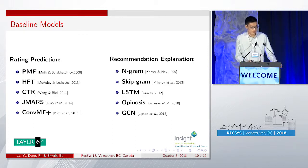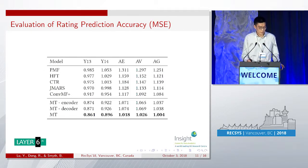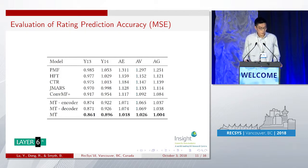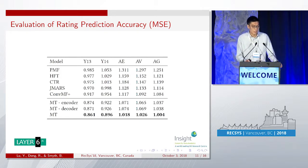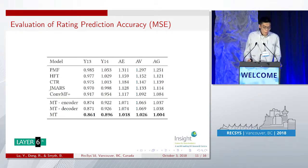Our sequence-to-sequence learning model can generate three types of explanations. For user-specific and item-specific explanations, we feed in the user and item-specific review documents and use the encoder to extract textual features from the review documents, based on which the decoder generates reviews reflecting user preferences and item features. For personalized explanations, we concatenate the user textual features and the item textual features generated by the encoder, then feed it to the decoder to generate personalized reviews.